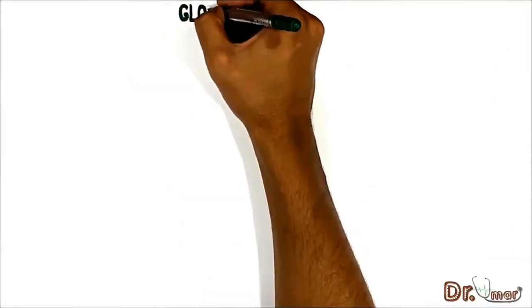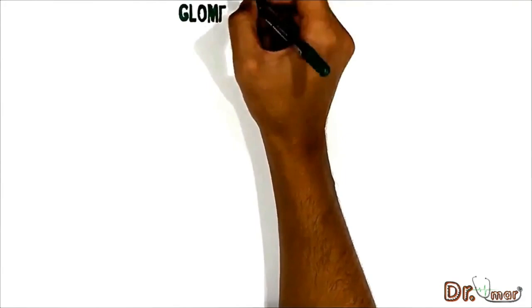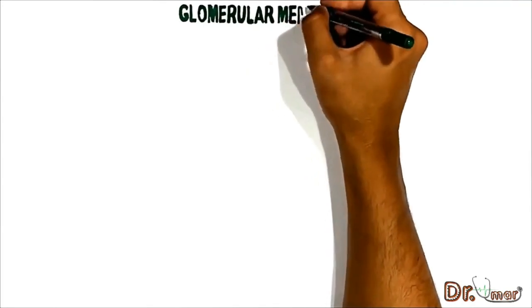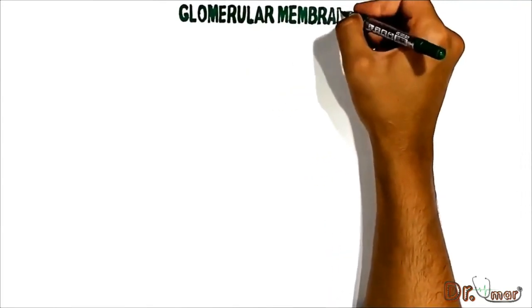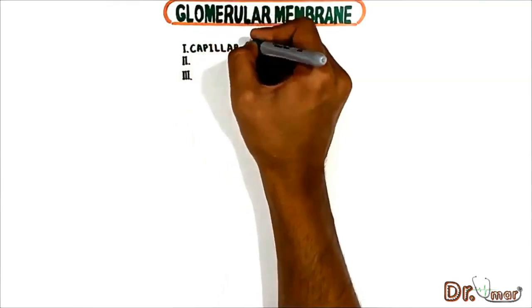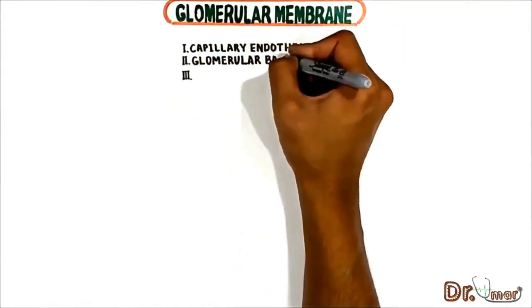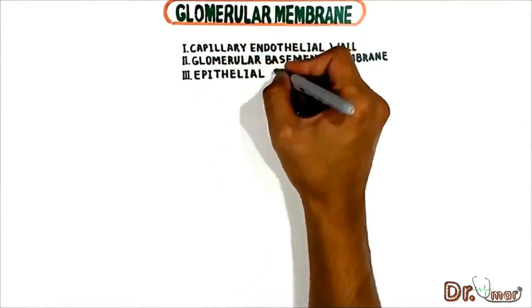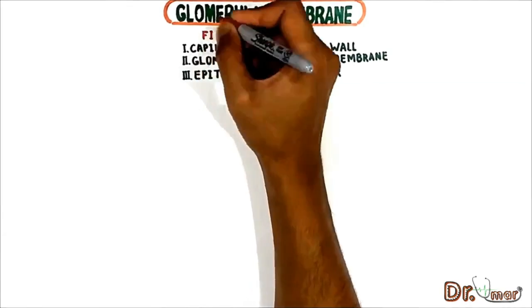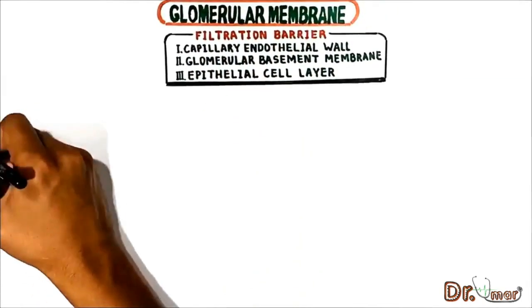GFR depends on either net filtration pressure or filtering membrane. We've already talked about net filtration pressure, so now we'll talk about the filtering membrane — the membrane of the glomerulus. The membrane of the glomerulus consists of three main structures: capillary endothelial wall, glomerular basement membrane, and epithelial cell layer of podocytes. Together these three layers make up the filtration barrier.